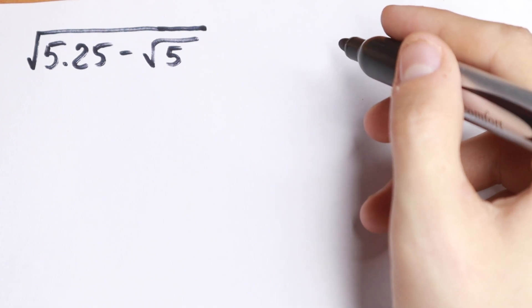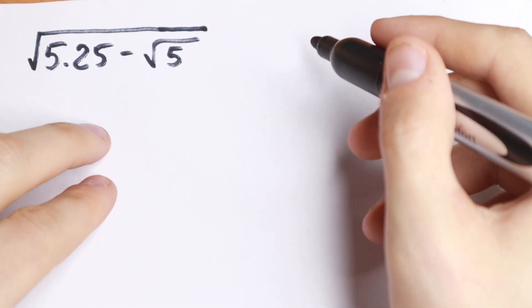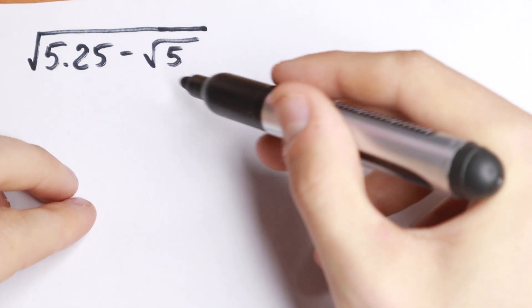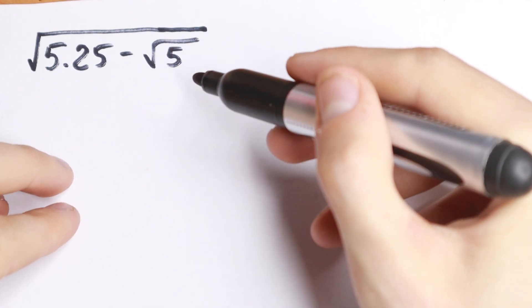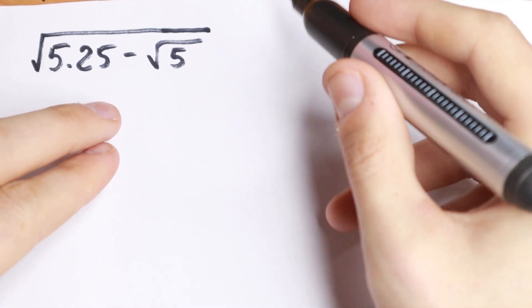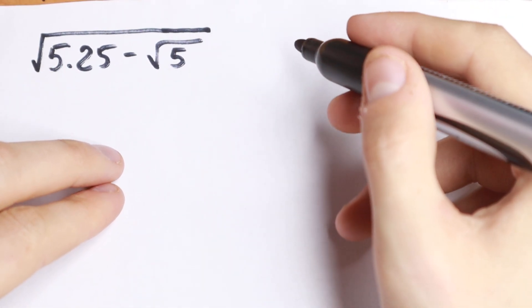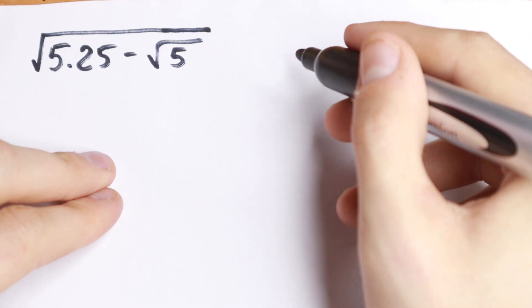Hello everyone, welcome back to MathMode. Today we have an interesting algebra problem. We need to simplify √5.25 minus √5. How can we simplify this?